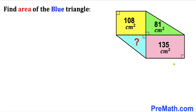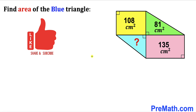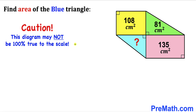Welcome to Premath. In this video we have got an interesting shape that consists of rectangles and triangles, such that the area of the pink rectangle is 135 cm², the area of the yellow rectangle is 108 cm², and the area of the green right triangle is 81 cm². We are going to calculate the area of the blue shaded triangle. Note that this figure may not be 100% true to scale.